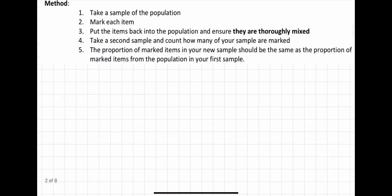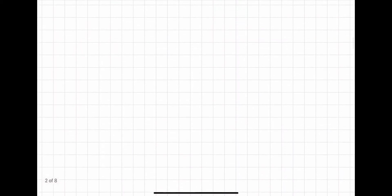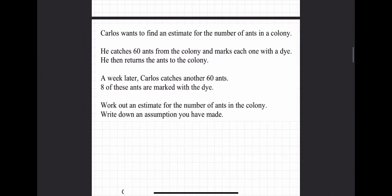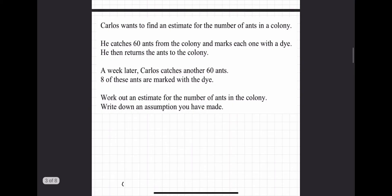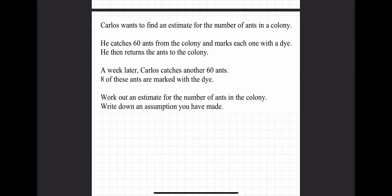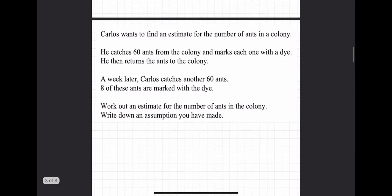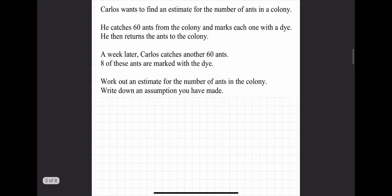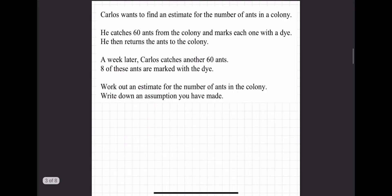So now let's look how we can use that in a question. Obviously, this is not English literature, so I'm not expecting you to memorize these steps. You don't memorize steps in statistics by writing down stuff on flashcards. You memorize it through practicing questions. So, Carlo wants to find an estimate for the number of ants in the colony. He catches 60 ants from the colony and marks each one with a die and then returns the ants to the colony. A week later, Carlos catches another 60 ants. Eight of these ants are marked with a die. Work out an estimate for the number of ants in the colony.